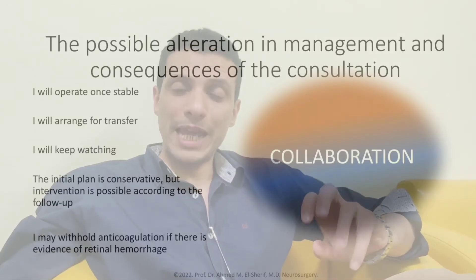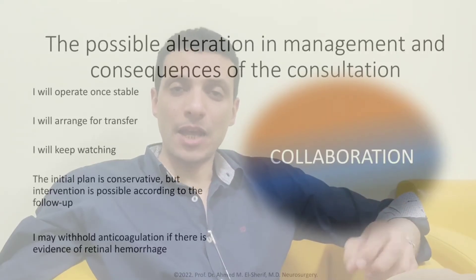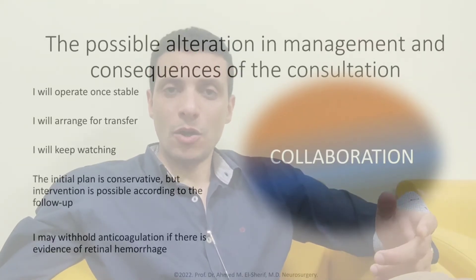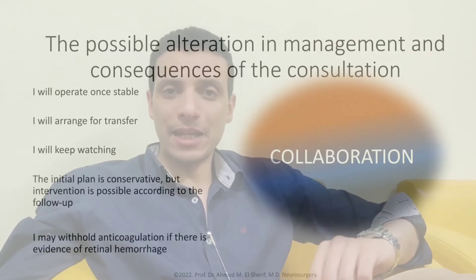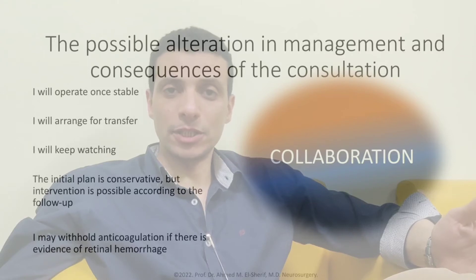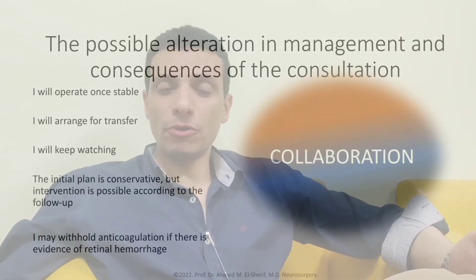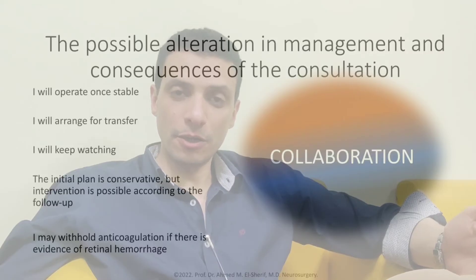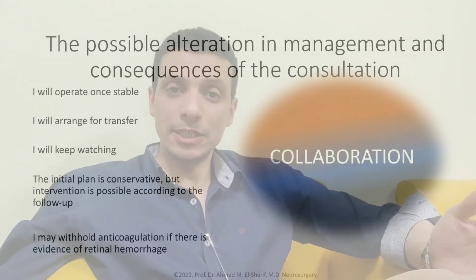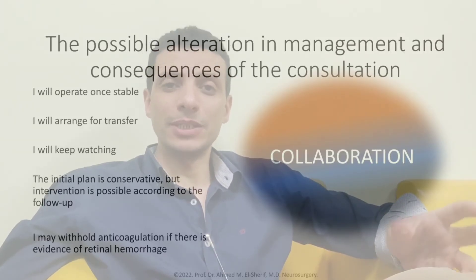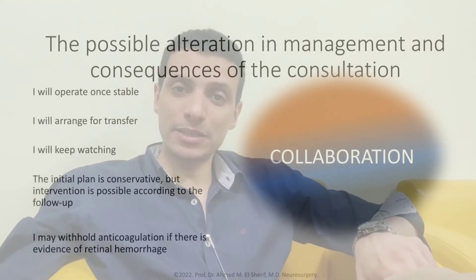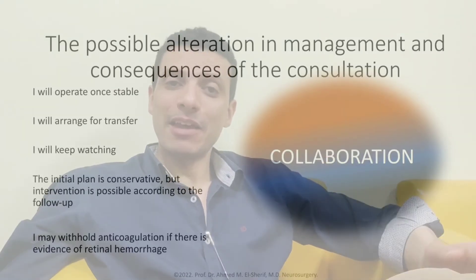The fourth C is Collaboration. This means expressing your plan and the consequences of your colleague's opinion. You have to engage them in the plan — let them know the impact of their opinion or decision on your management plan. Provide a clear explanation: for example, you are planning for conservative treatment, but if certain conditions arise, you may change to surgical decompression. Express that surgery is risky, but avoiding surgery means the patient may be bed-bound longer, requiring anticoagulation, which has a negative impact on the patient's diagnosis. This context affects the anesthesia team's decision when they understand your plan.